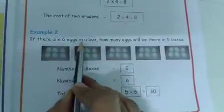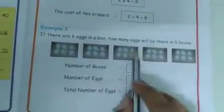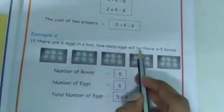Now look at the previous page — here also giving one example. Like the same way: if there are 6 eggs in a box. In each box, how many eggs are there? 1, 2, 3, 4, 5, 6 — in each and every box they are giving 6 eggs. We want to find out how many eggs will be there in 5 boxes. So number of boxes is 5 — put 5 here. Number of eggs in each box is 6 — put 6 here.